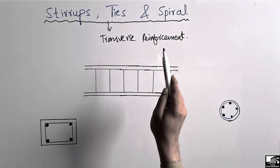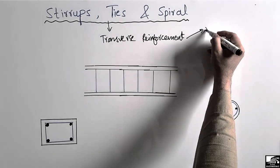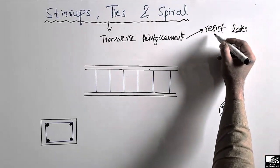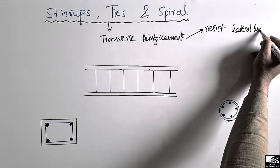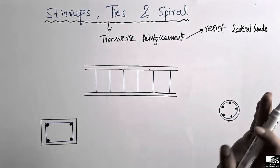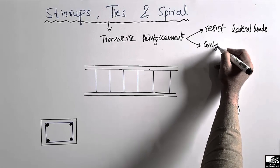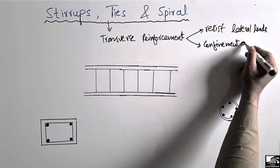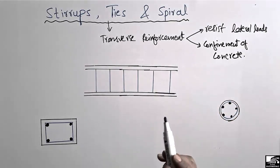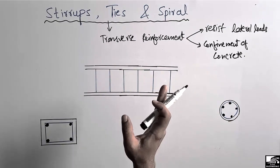Now, what is transverse reinforcement? Transverse reinforcement is mainly used to resist the lateral loads coming on the structure — loads coming from wind, earthquake, or water — and also helps in the confinement of concrete. These are the two main purposes of transverse reinforcement. Longitudinal reinforcement, on the other hand, is mainly responsible for taking the main load of the structure.